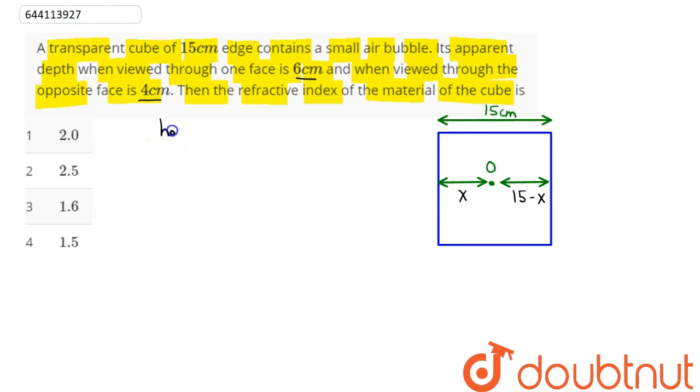So we have height of object divided by incident refractive index is equal to height of image divided by refractive index of refracted ray. Now, if we consider this as an object, when a ray passes through,